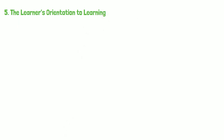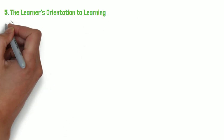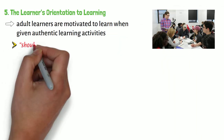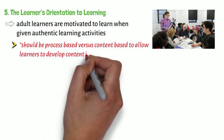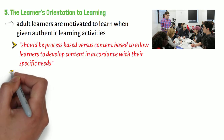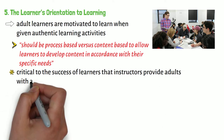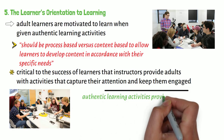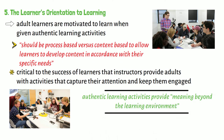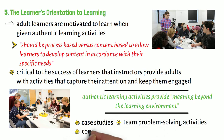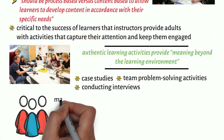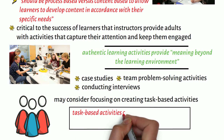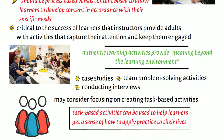Fifth, the learner's orientation to learning. The fifth assumption in Knowles's adult learning theory is that adult learners are motivated to learn when given authentic learning activities, and as such, the curriculum should be process-based versus content-based to allow learners to develop content in accordance with their specific needs. It is critical to the success of learners that instructors provide adults with activities that capture their attention and keep them engaged. Authentic learning activities provide meaning beyond the learning environment. Examples of authentic activities include case studies, team problem-solving activities, and conducting interviews. Faculty members may consider focusing on creating task-based activities, which can be used to help learners get a sense of how to apply practice to their lives.